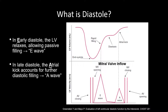In the second phase, called diastasis, there is no flow across the mitral valve as the pressure between the left atrium and left ventricle equalizes — and since there is no flow, there is no velocity across the valve. Finally, in the third or late phase of diastole, the atrial kick accounts for more LV filling, depicted as the A-wave. Together, the E and A-wave make up what we call the mitral valve inflow pattern, and this forms the basis of diastology assessment at the point of care.